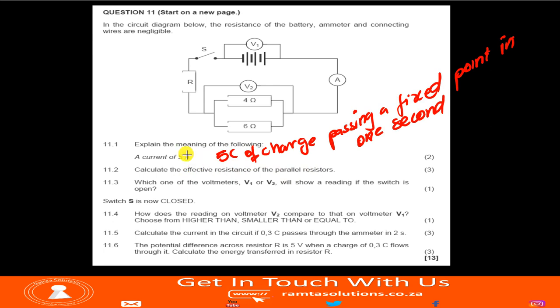You have five coulombs of charge passing a fixed point in one second. This is the meaning of current of five amperes. Remember the definition of current was, it is the amount of charge passing a fixed point in one second. Now here, the amount of charge is five coulombs.